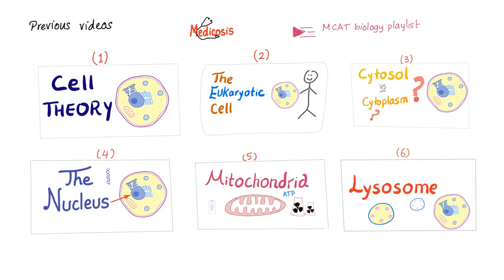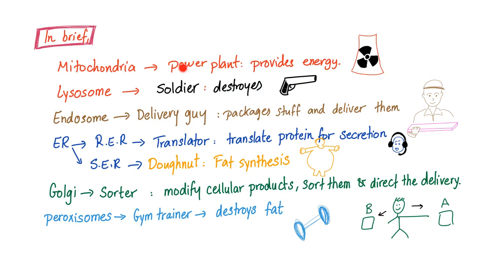These are my previous videos on biology for MCAT students, so don't forget to subscribe and save my MCAT biology playlist. Mitochondria is the powerhouse. Lysosome is the soldier. Endosome, the delivery guy. Endoplasmic reticulum rough is the translator. Endosmooth is the donut. Golgi is the sorter. Peroxisomes are gym trainers.